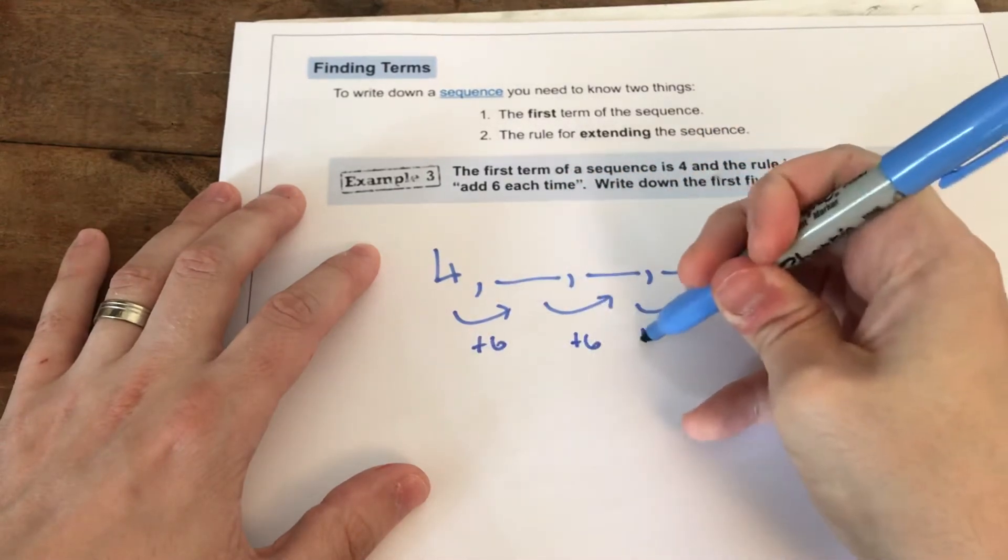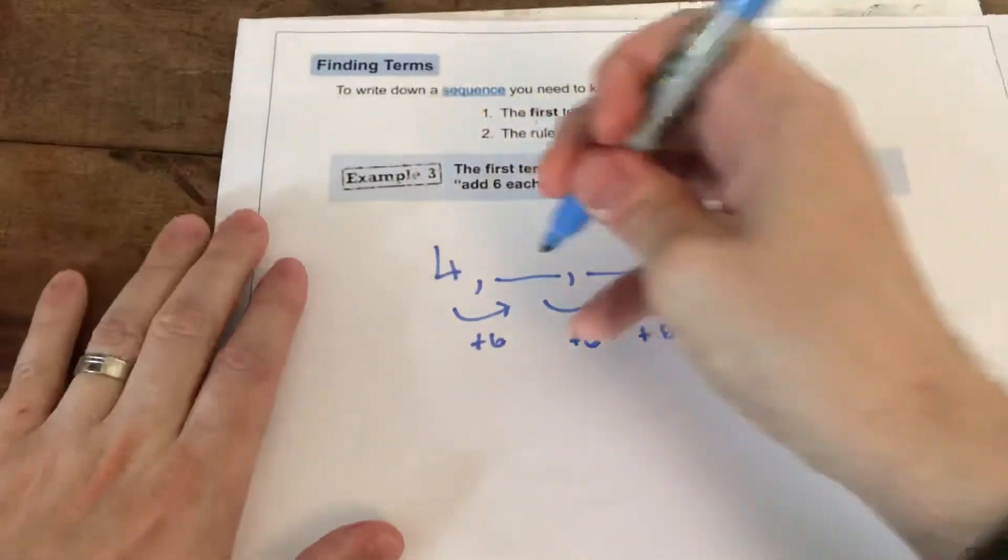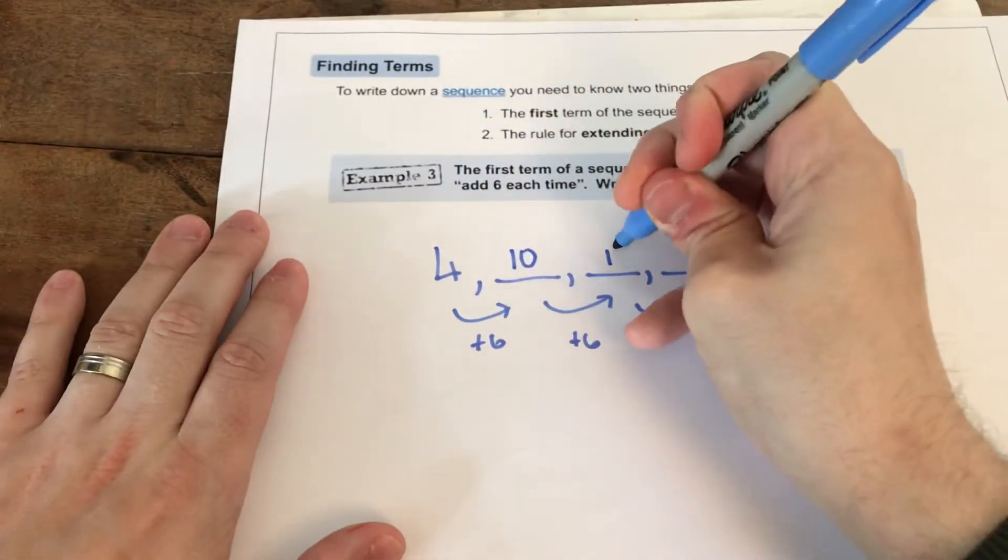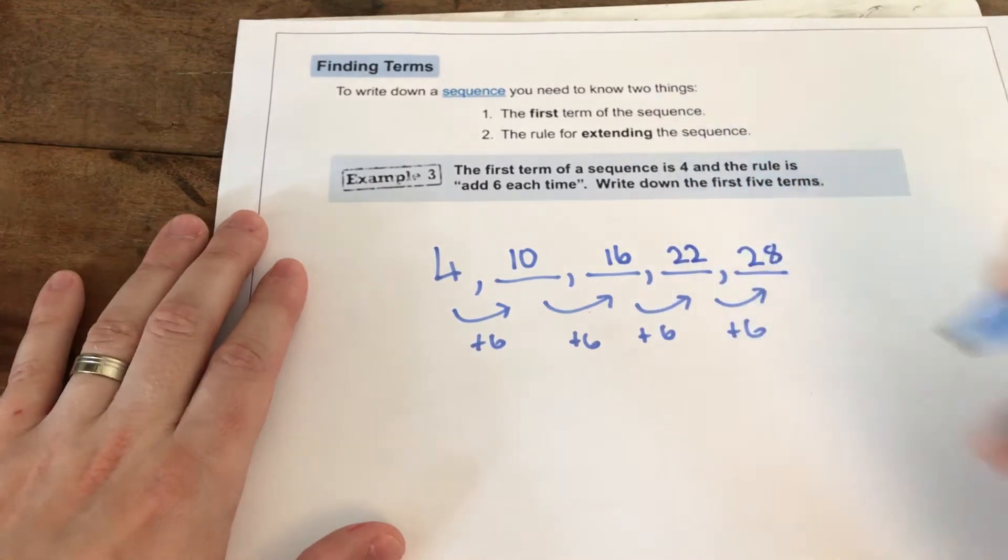So, all we're going to do is start with 4 and add 6. So, we get 10, 16, 22, and 28.